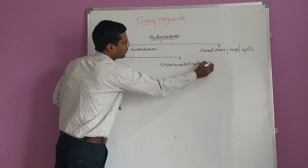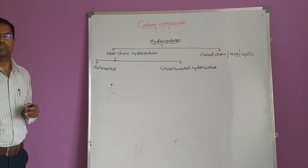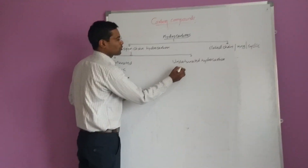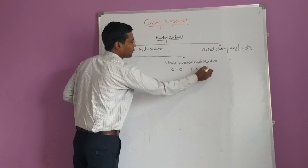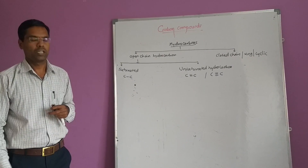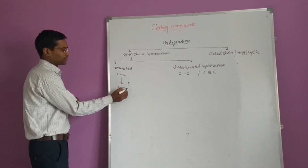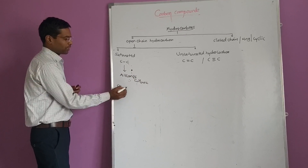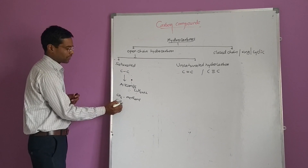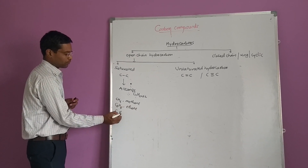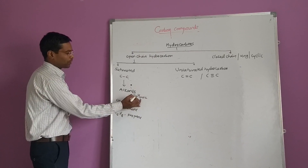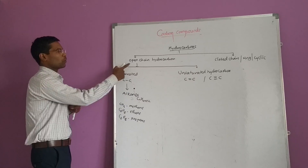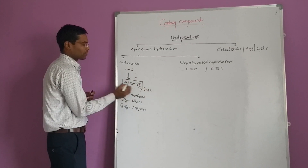Saturated hydrocarbons consist of carbon-carbon single bonds and are called alkanes. The general formula of alkanes is CnH(2n+2). Simple examples: methane, ethane, propane. Alkanes are defined as saturated open chain hydrocarbons. Unsaturated hydrocarbons that consist of carbon-carbon double bonds are called alkenes, with the general formula CnH(2n). Examples of alkenes: ethene (C2H4) and propene (C3H6).